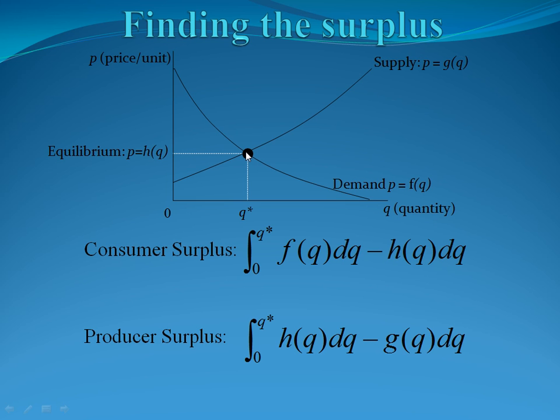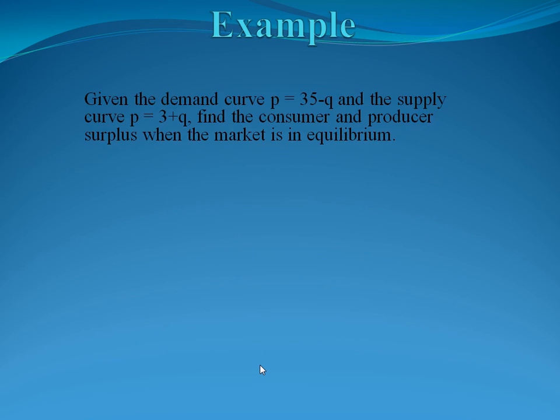Similarly, the producer surplus we're going to get by doing the area under the horizontal line minus the area under the supply curve. So again, we integrate from 0 to the equilibrium quantity h(Q) minus g(Q). Now let's do this with some numbers so we can see how we apply these to our integral.